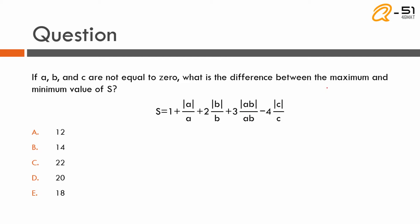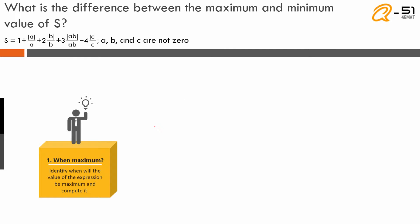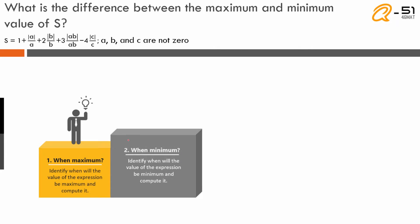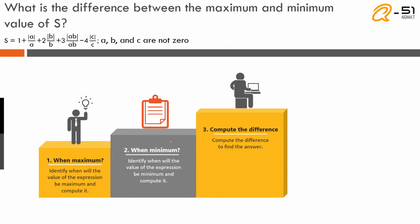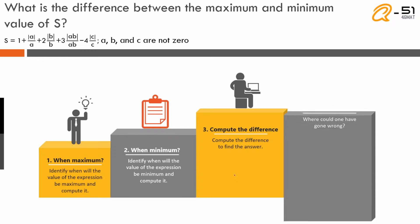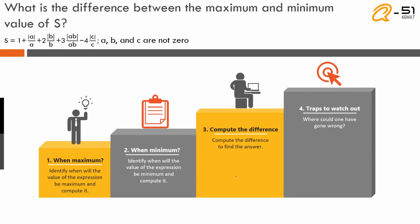We need to find out the difference between the maximum value that S can take and the minimum value that S can take. We are going to break this into 4 steps: first, identify when the expression is maximum and compute that value; second, understand when it is minimum and compute that value; third, compute the difference to get the answer; and finally, identify what the trap is and where one could go wrong.